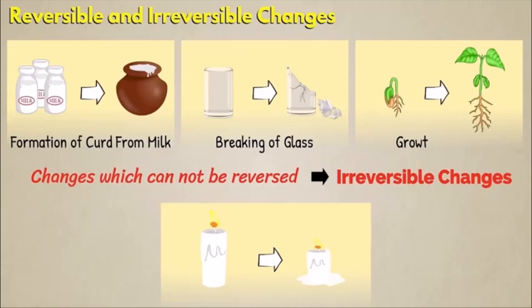Another type of change is reversible and irreversible changes. Reversible changes are those that can occur in a forward and reverse direction again and again — if a change has occurred, you can repeat it in reverse. Irreversible changes are those which cannot be reversed — once the change has occurred, you cannot bring the substance back to its original form.